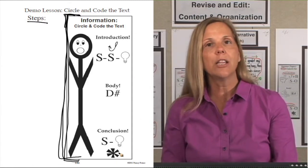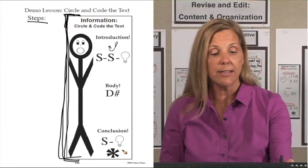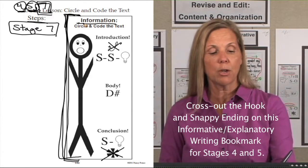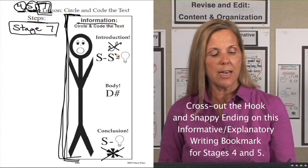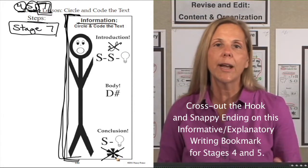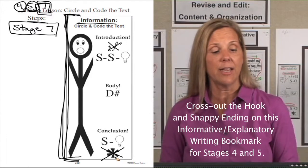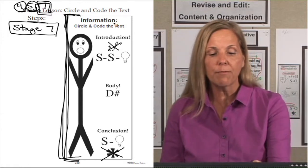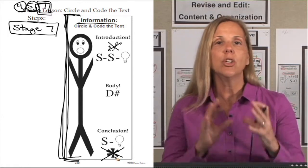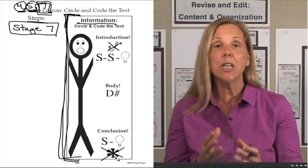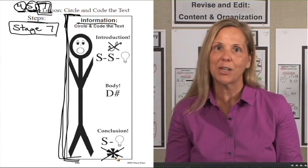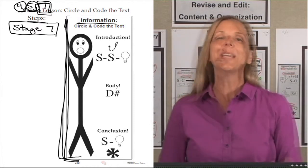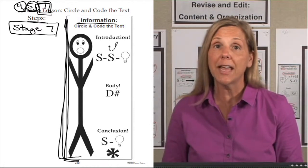These are the parts and elements in your stage 7. So this is stage 7 writing. When we're using stage 4 and 5, use this bookmark but cross out the hook and the snappy ending with pencil so they can erase that when they move up to stage 7 and have a hook and a snappy ending in their writing. This way we only have one bookmark for information. It's a wonderful way to reduce the number of bookmarks you give to your kids, as well as showing them that as they move up the stages they're adding more to their writing. Let's erase our hook and snappy ending on this bookmark because our demonstration lesson is using a stage 7 piece of writing.